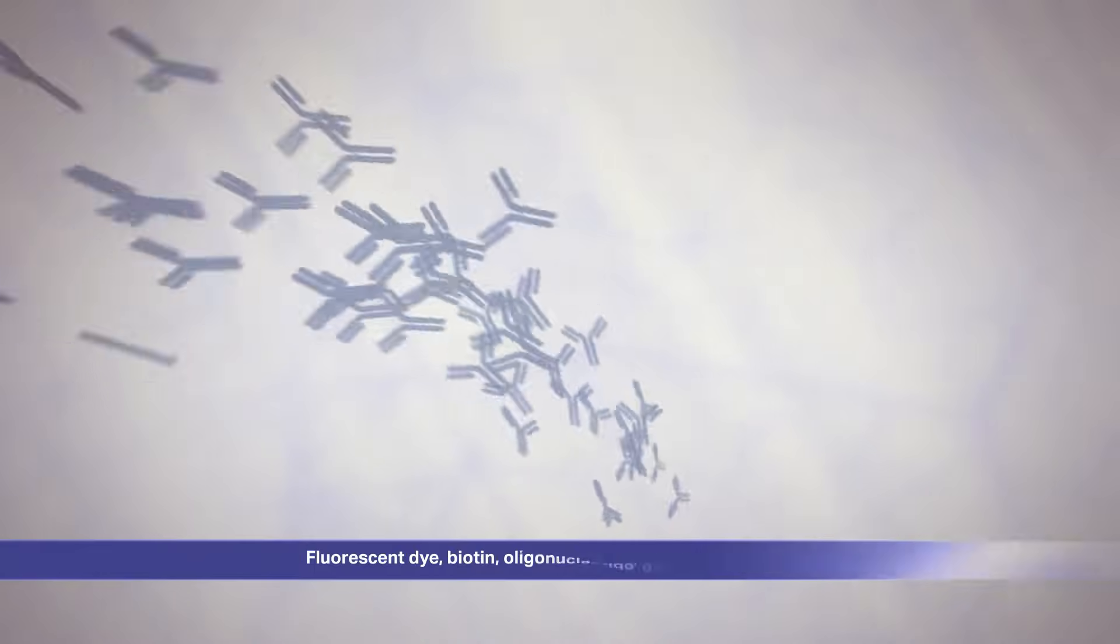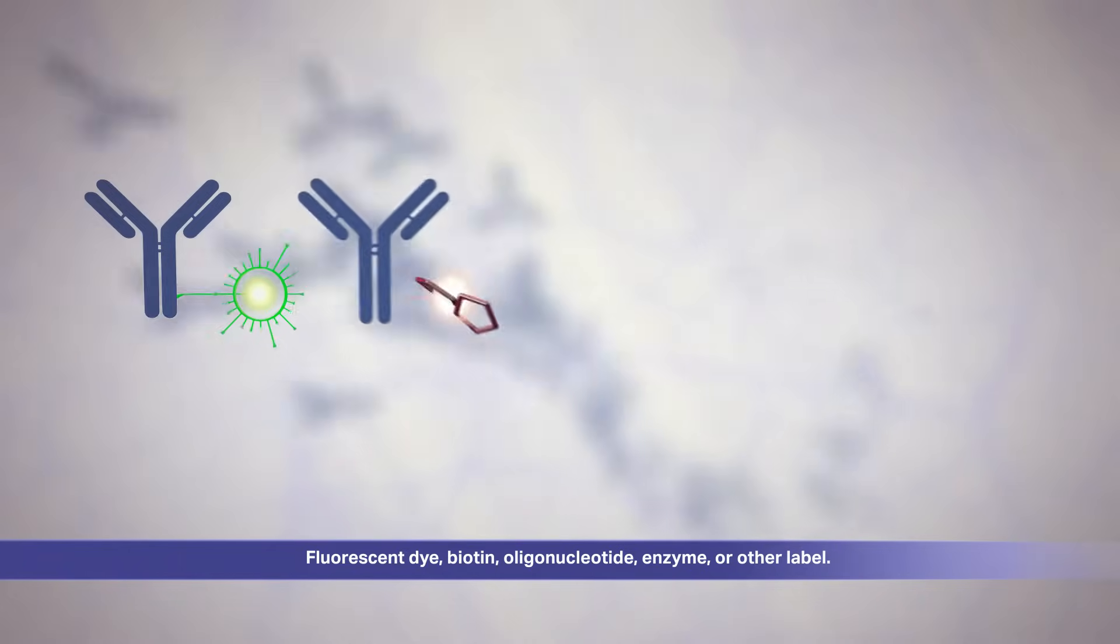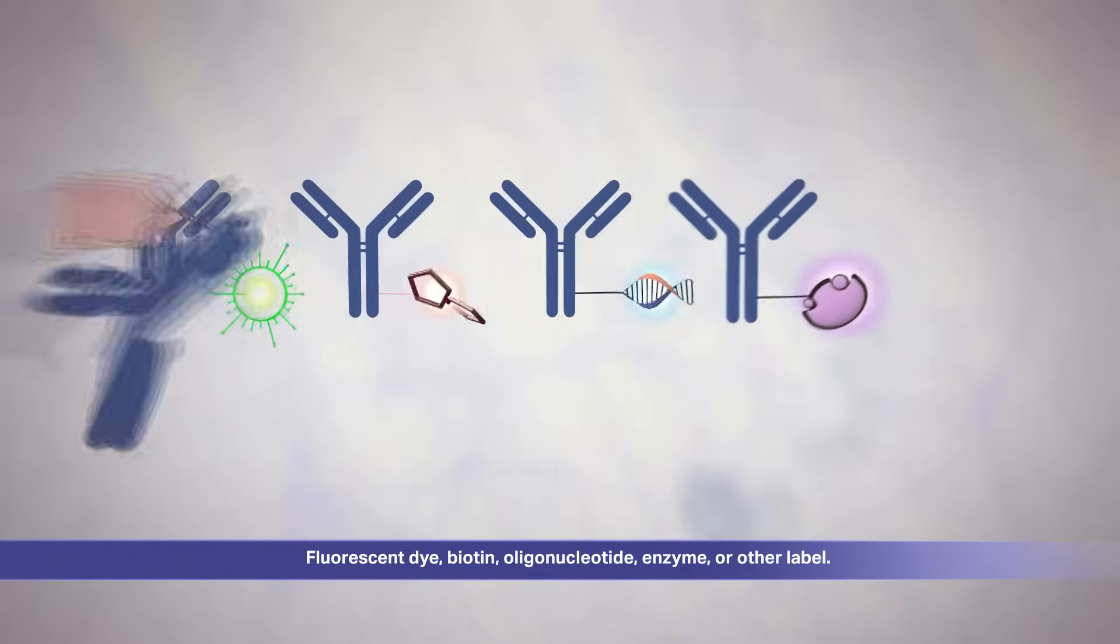If you use antibodies in your research, at some point you will probably need to conjugate your antibody with a fluorescent dye, biotin, oligonucleotide, enzyme, or other label.